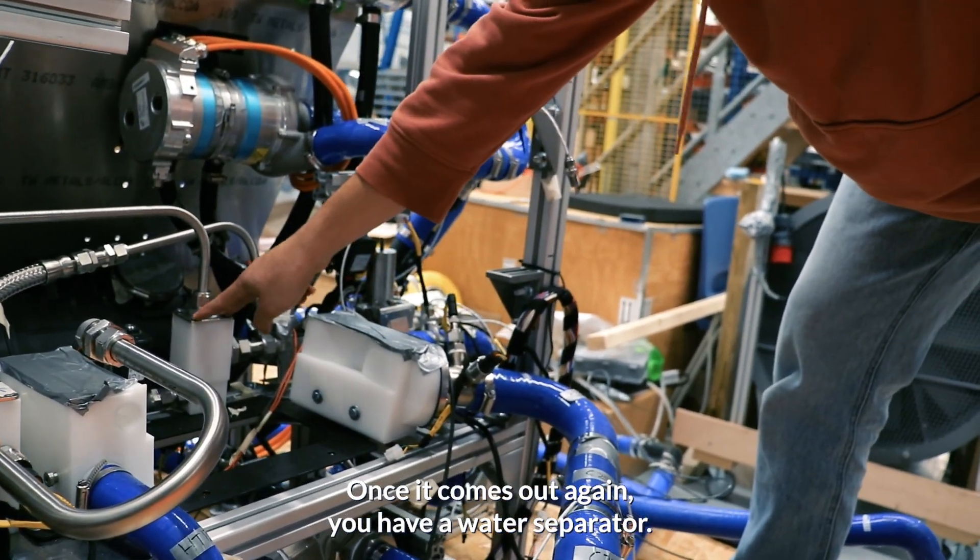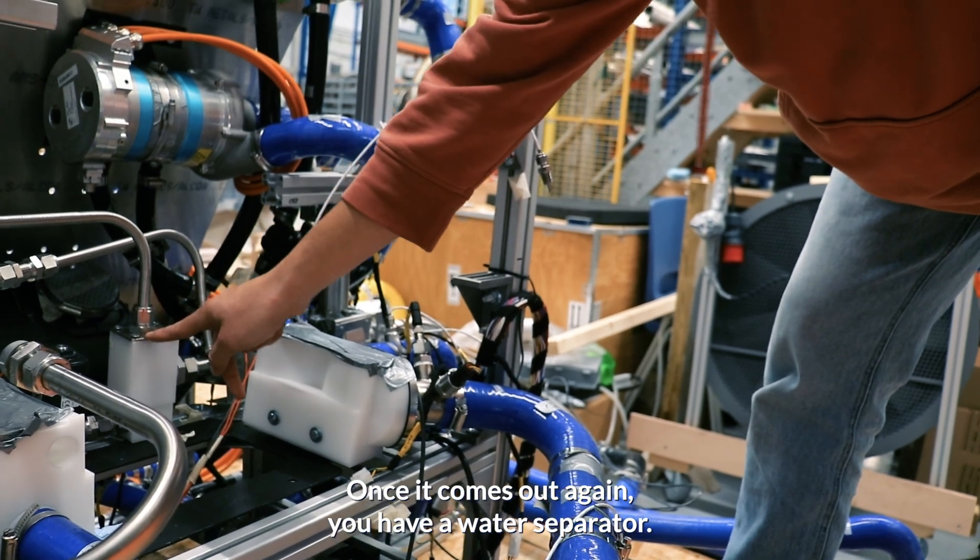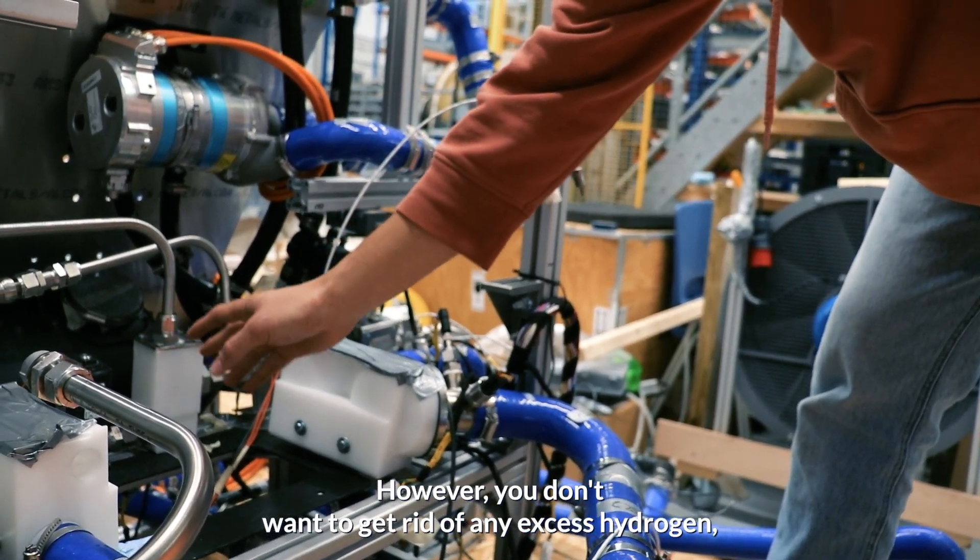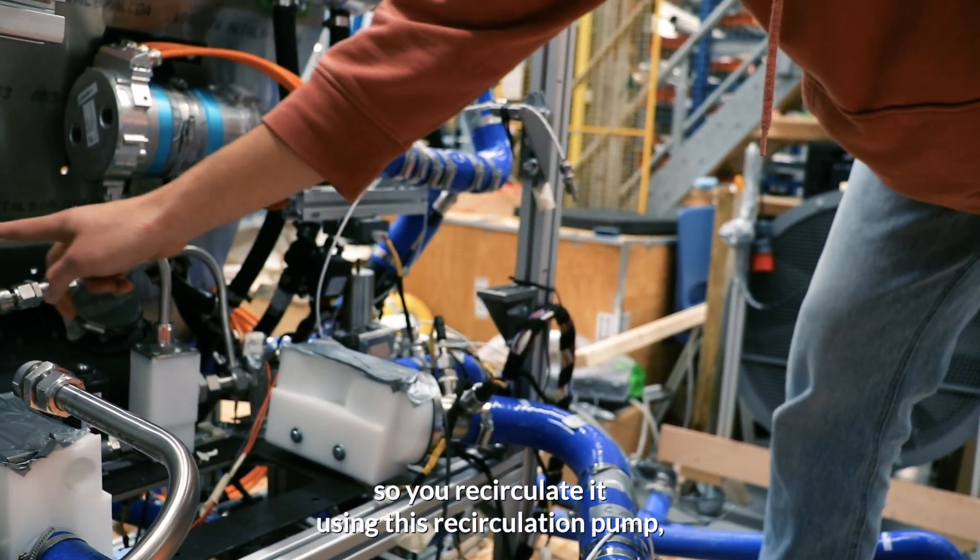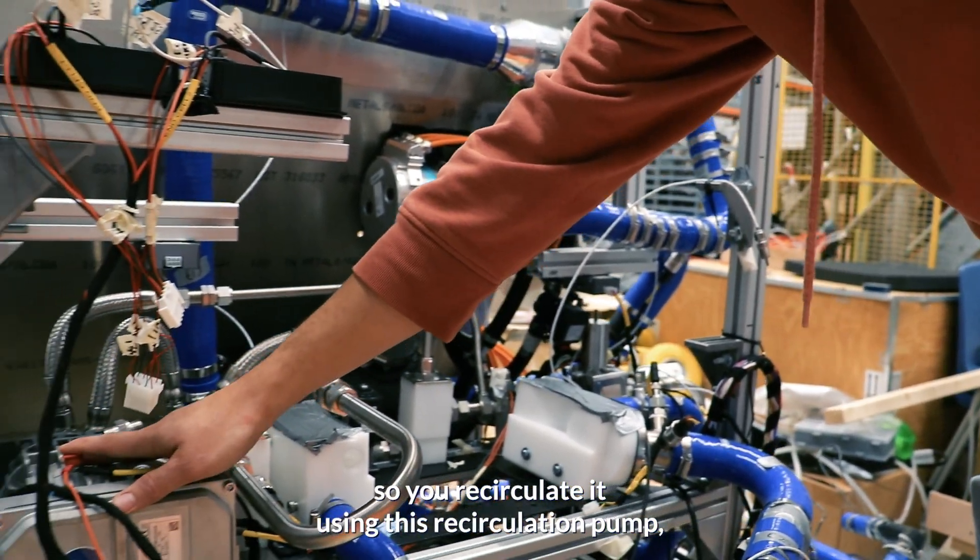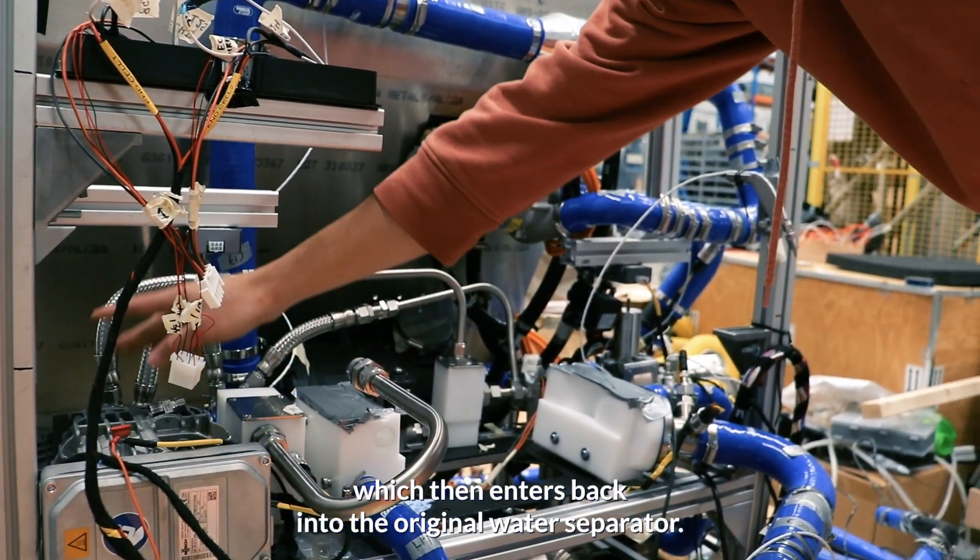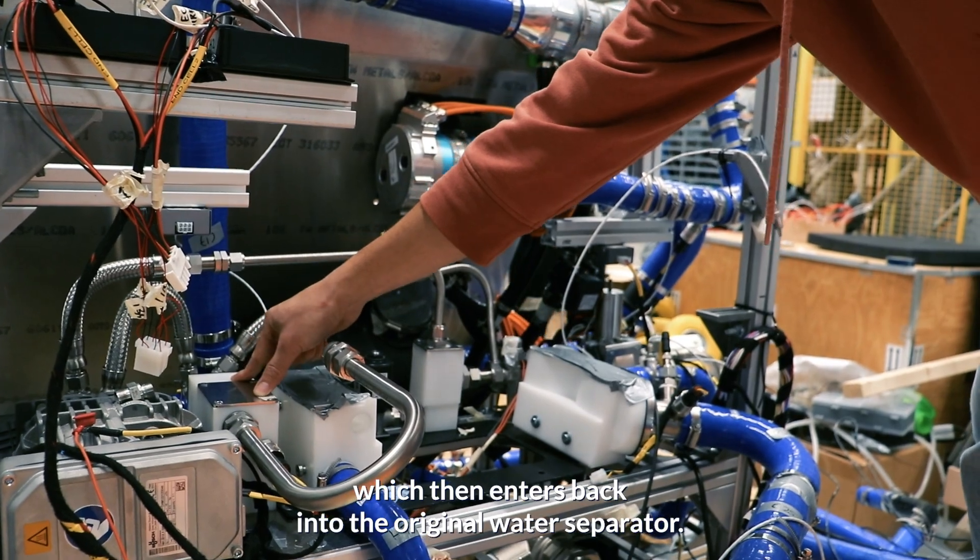Once it comes out, again you have a water separator. However, you don't want to get rid of any excess hydrogen, so you recirculate it using this recirculation pump, which then enters back into the original water separator.